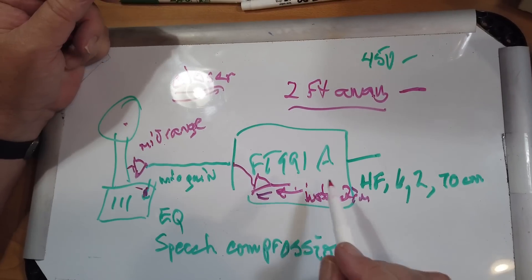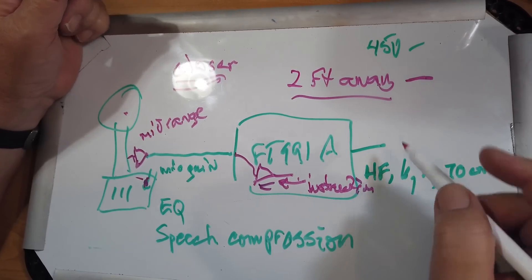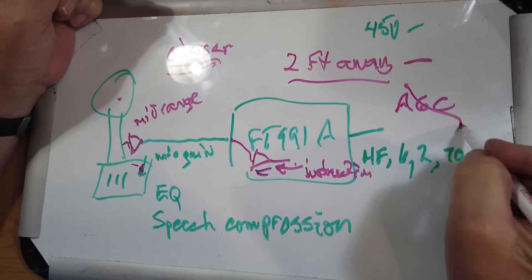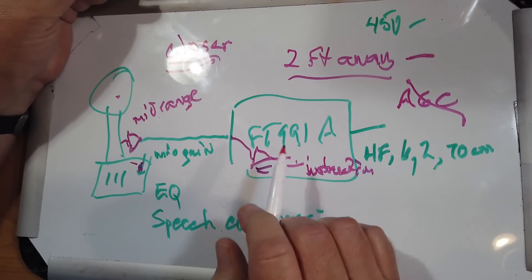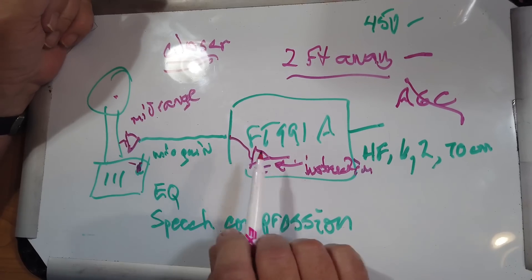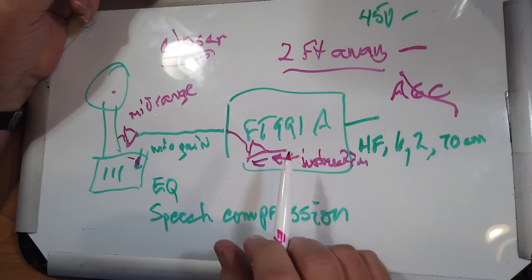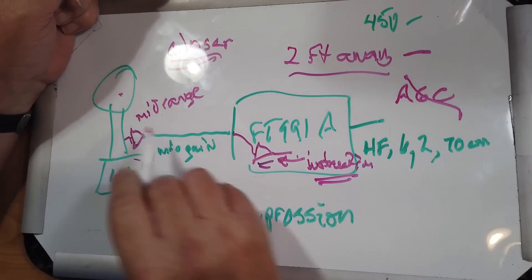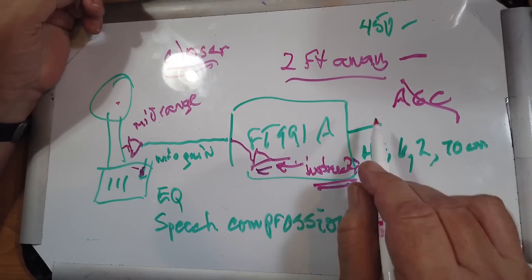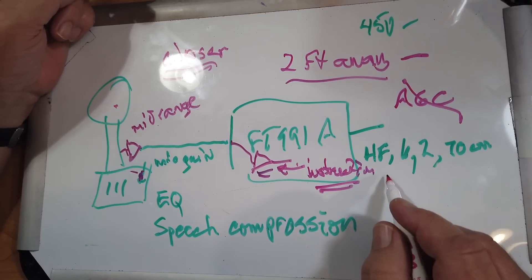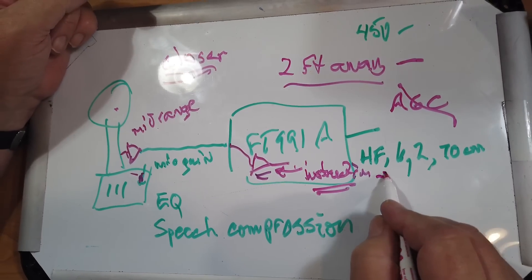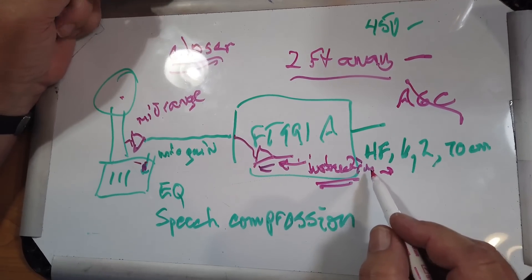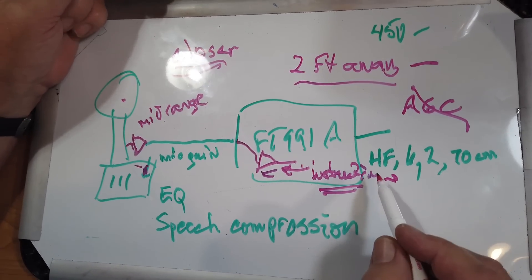These controls are not automatic gain control. When you set a mic gain, that's the mic gain — it does not automatically adjust your voice. So you really do have to set this properly so that you get the proper voice level. Your instruction manual will tell you what you should get out. There are meter readings you can look at to make sure they are proper.